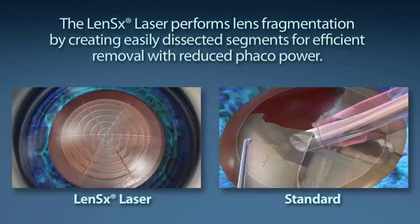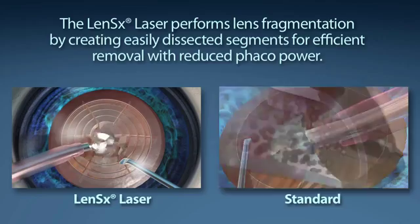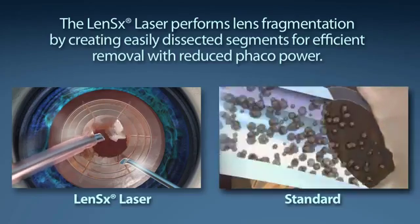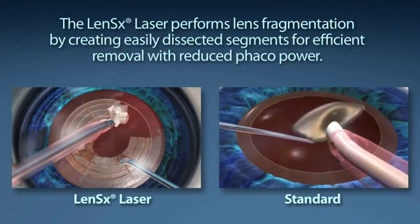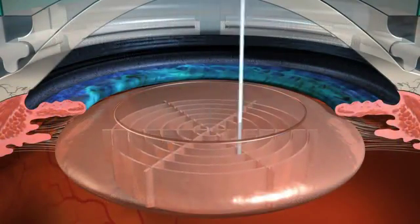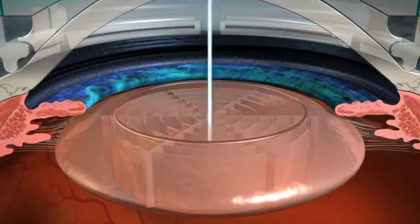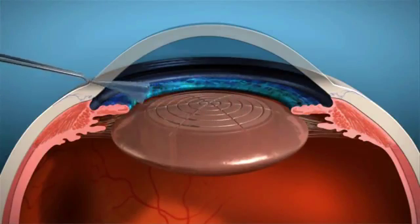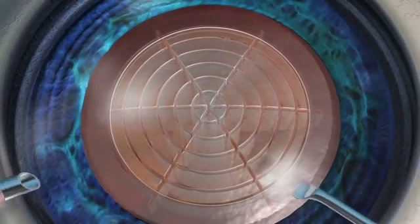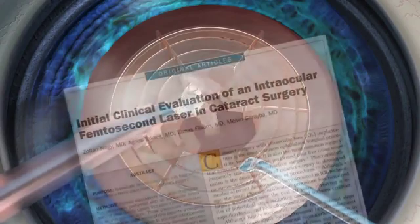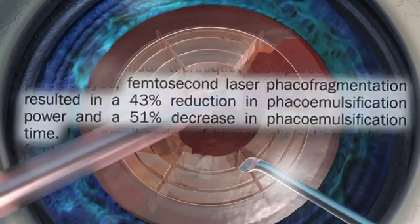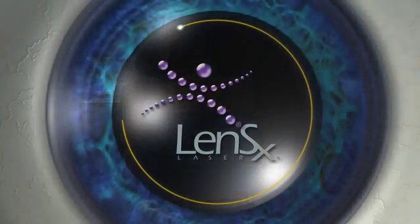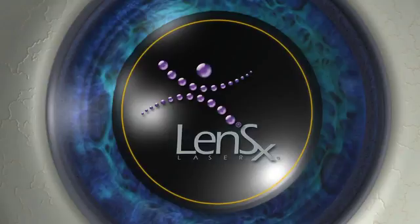Standard cataract surgery requires a phaco-emulsification machine to segment and remove the content of the cataract. The goal of your surgeon is to reduce the amount of phaco energy used to remove your cataract. The LensX laser performs lens fragmentation, creating easily dissected segments for efficient removal with little or no phaco power. With the laser pulses utilized, the LensX laser provides the surgeon a 43% reduction in phaco power and 51% reduction in phaco time compared to the standard cataract procedure.